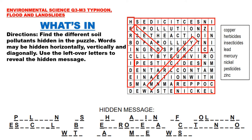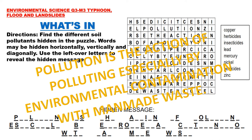Here are the different soil pollutants hidden in the puzzle: insecticides, herbicides, lead, mercury, pesticides, zinc, copper, and nickel. Using the leftover letters, we can reveal the hidden message: Pollution is the action of polluting, especially by environmental contamination with man-made waste.